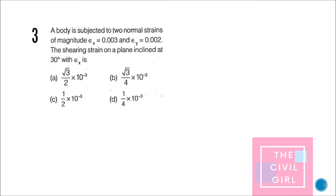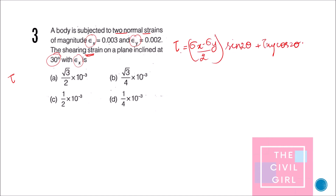Next question: a body is subjected to two normal strains of magnitude epsilon x and epsilon y. The shearing strain on a plane inclined at 30 degrees with the x-axis is what? When asked for shear strain, note the formula for shear stress: tau on a plane has a specific form. For shear strain, tau is simply replaced by phi (shear strain), but you write phi/2.